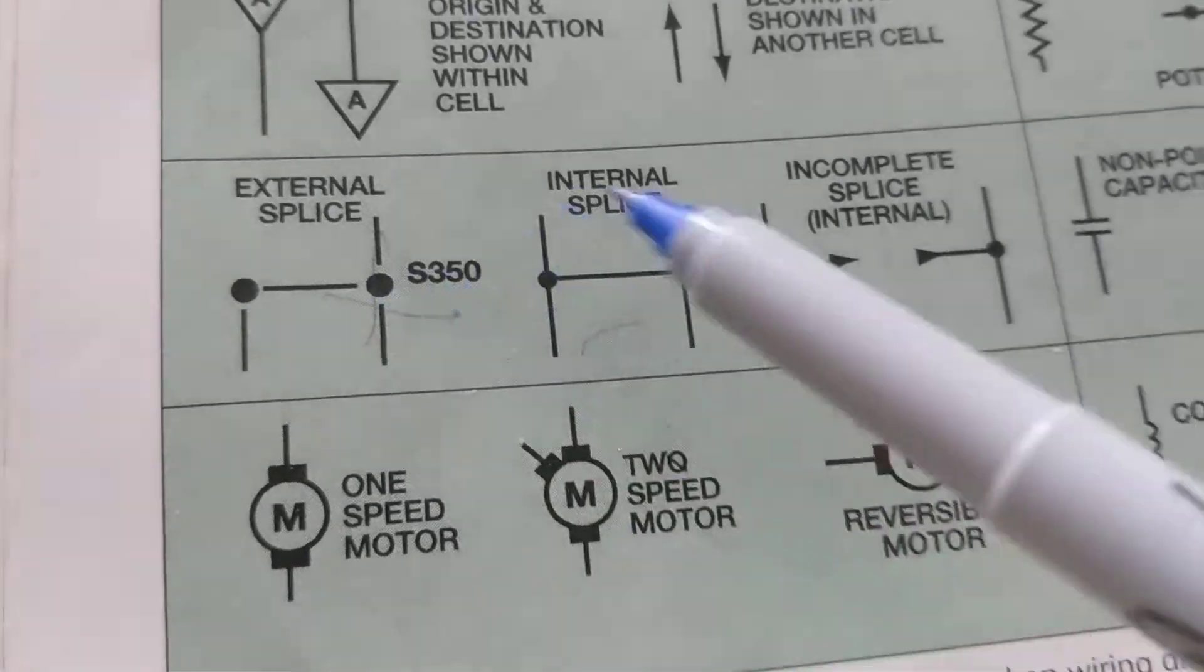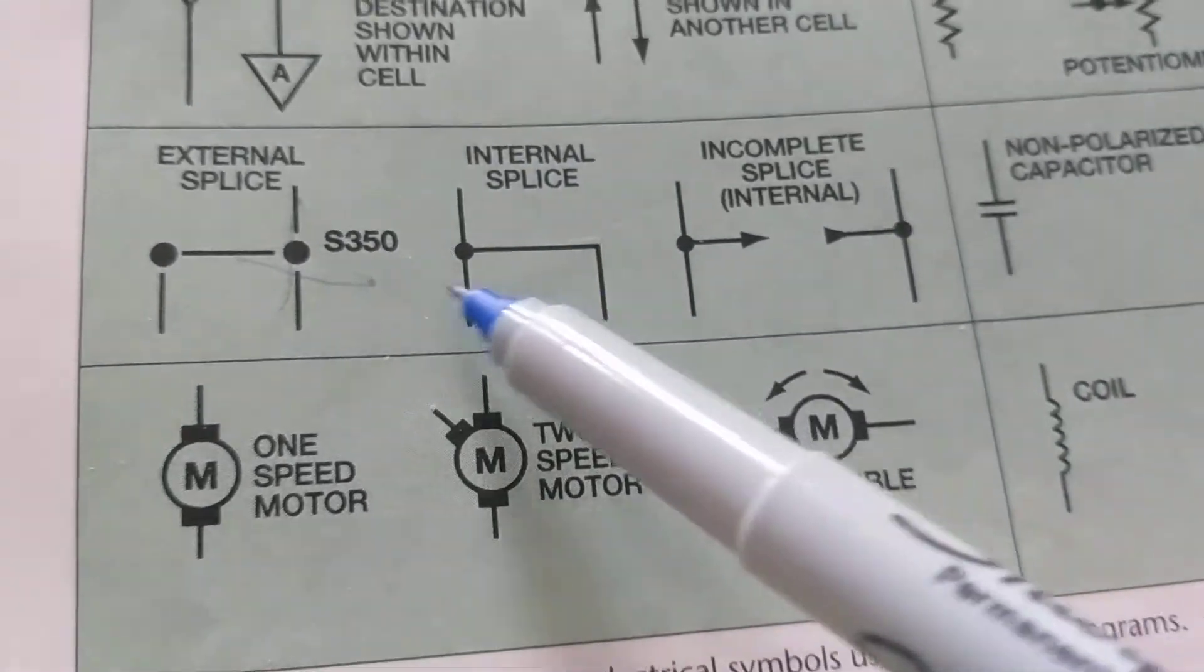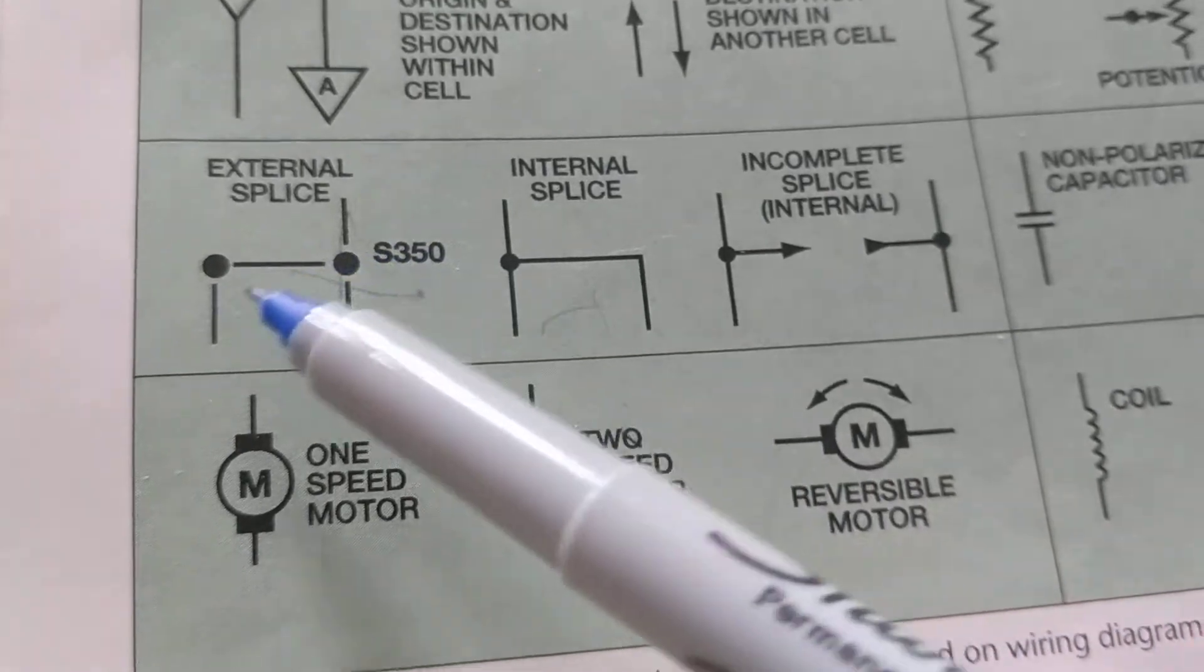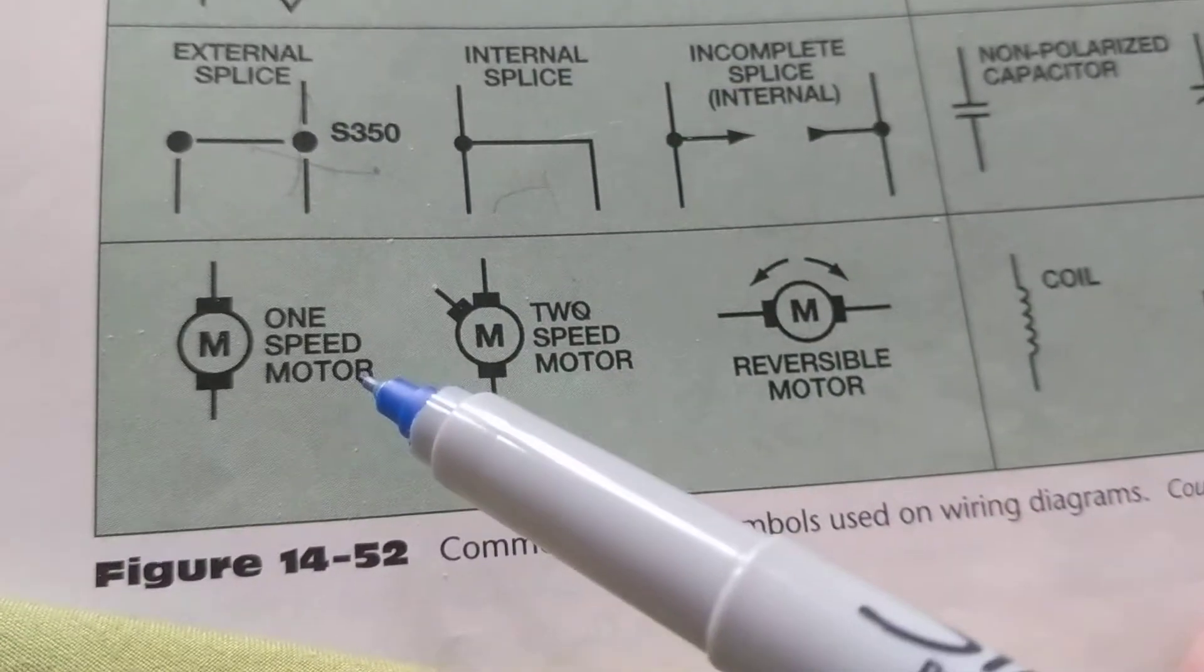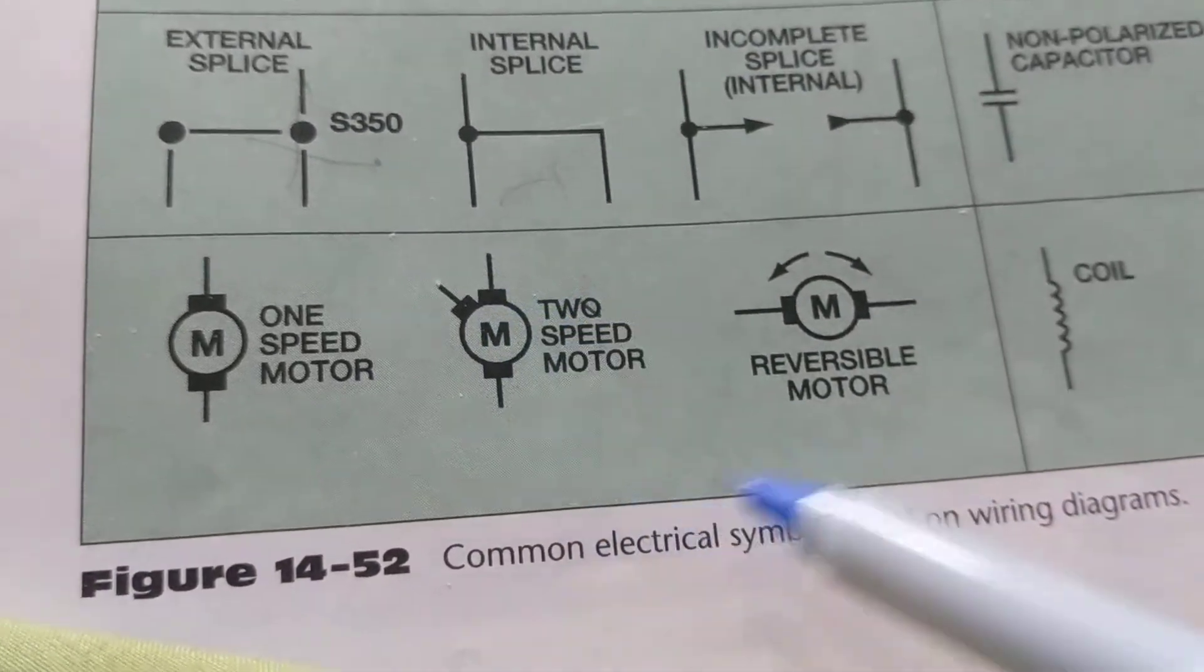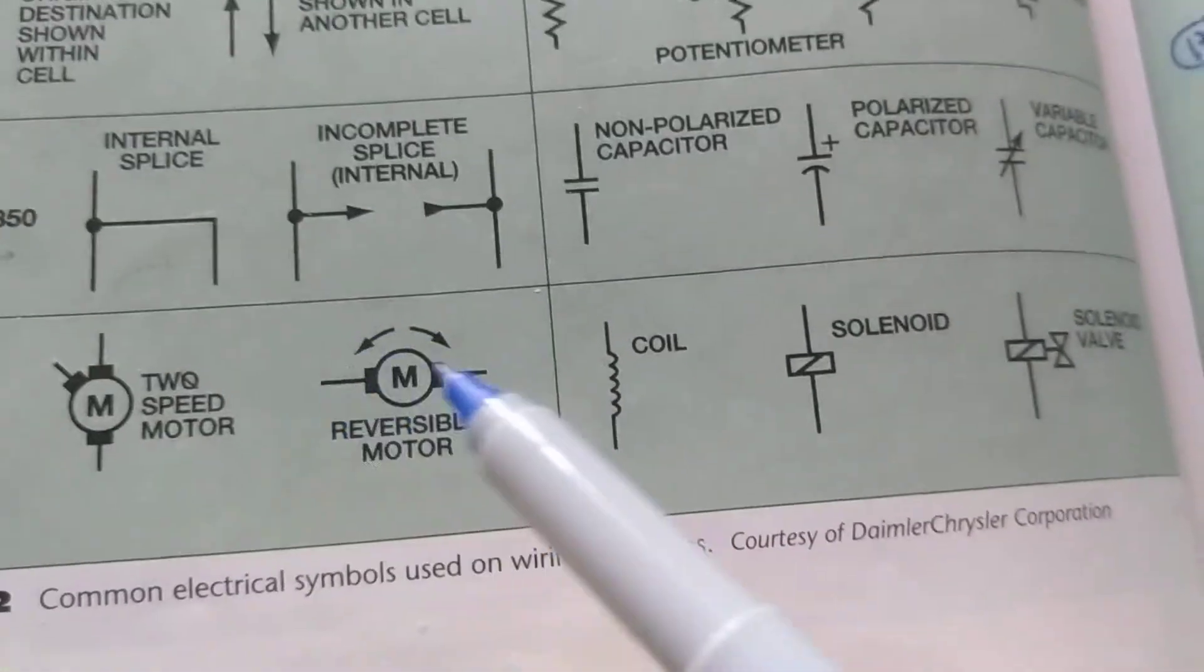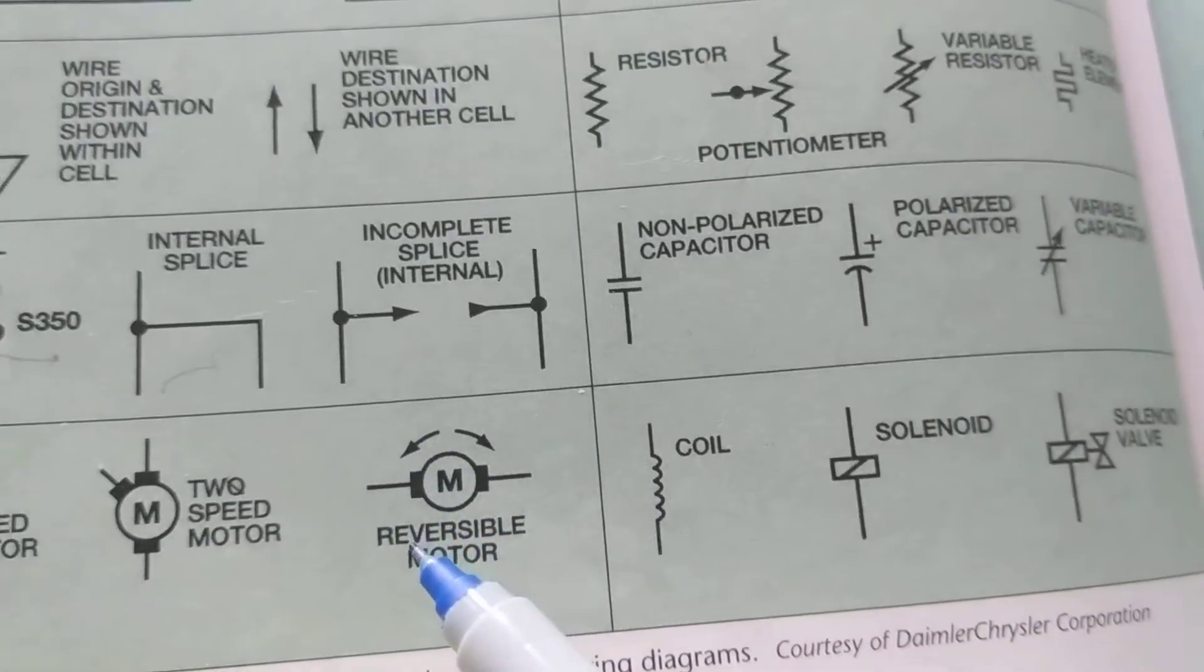This is a splice, connections, one part to another part of a circuit. A one-speed motor, and here is two-speed motors. Reversible motor can mean bi-directional, goes both ways. Now, let's start at the schematic.